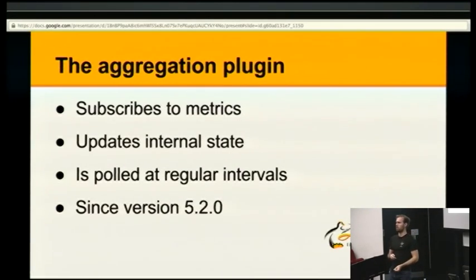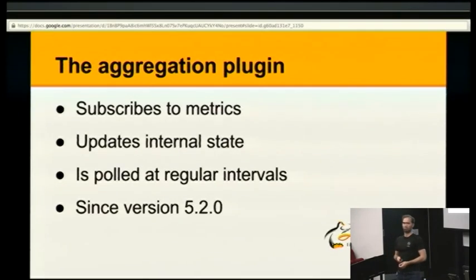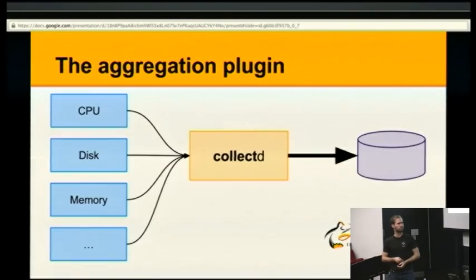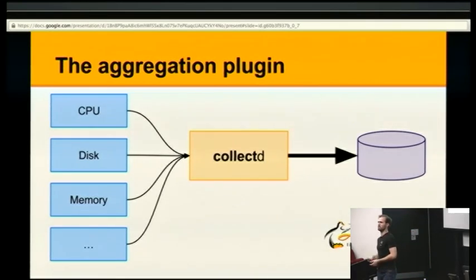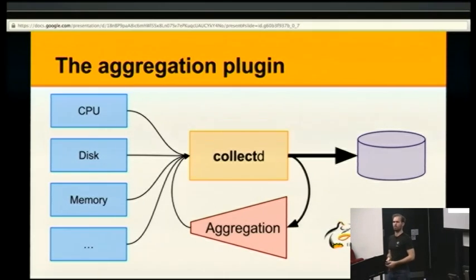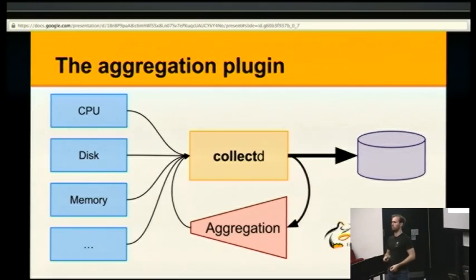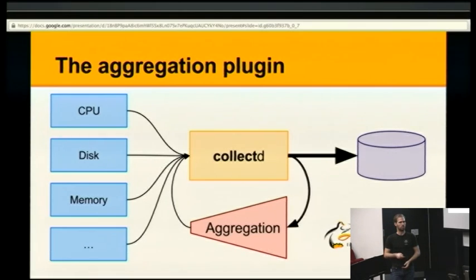The way the aggregation plugin in CollectD works is that on one side it subscribes to metrics, on the other side it spits out the aggregates at regular intervals. It was added about two years ago, so it's in version 5.2. Unfortunately Debian Wheezy still ships an older version. Schematically: on the left-hand side you have the input plugins that read several metrics, on the right-hand side you have the storage, and the aggregation plugin closes the loop — it gets metrics, aggregates them, and then acts as an input plugin again. There's a prevention that stops aggregates of aggregates within the same CollectD instance.